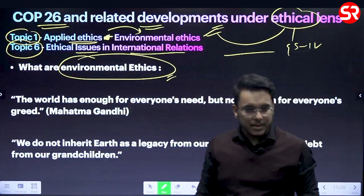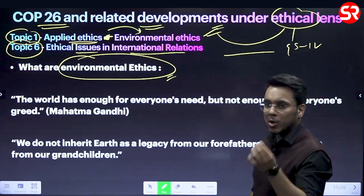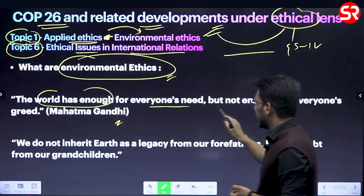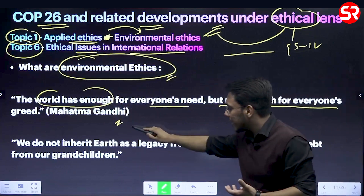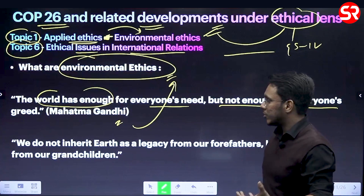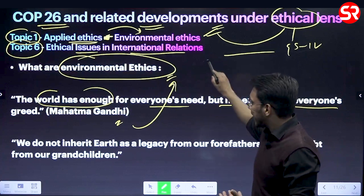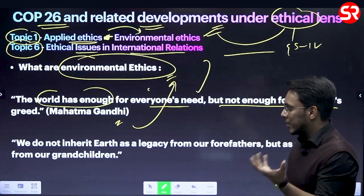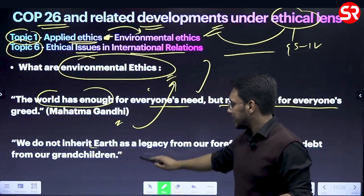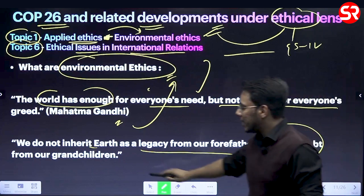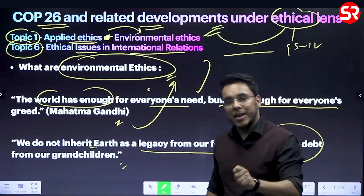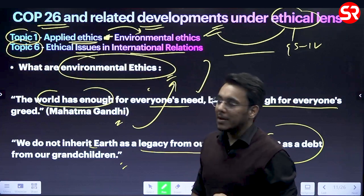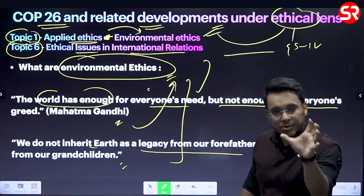Environmental ethics can be understood through two influential quotes. First, Gandhi's quote: 'The world has enough for everyone's need but not for everyone's greed' - calling for environmental conservation and sustainable development. Second: 'We do not inherit the earth as a legacy from our forefathers but as a debt from our grandchildren' - calling for restraint on consumption of environmental resources, since those resources are a debt taken from future generations.